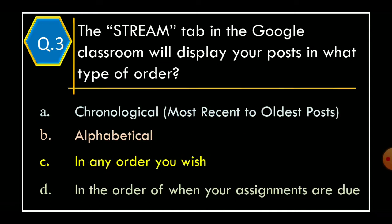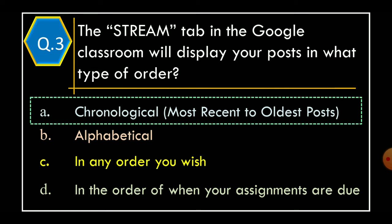Question 3: The Stream Tab in the Google Classroom will display your post in what type of order? Option A: Chronological Most Recent to Oldest Post, Option B: Alphabetical, Option C: In any order you wish, Option D: In the order of when your assignments are due. And correct option is Option A: Chronological Most Recent to Oldest Post.